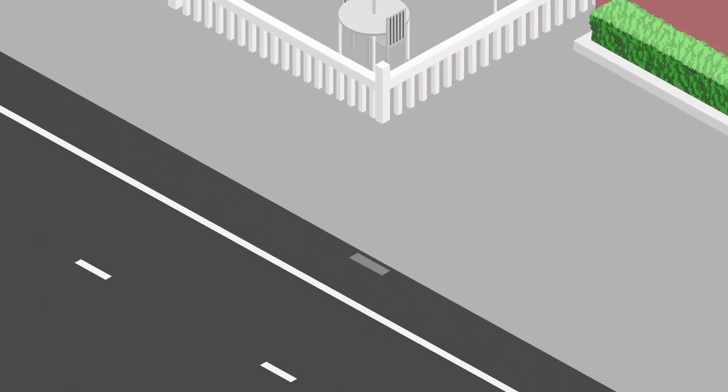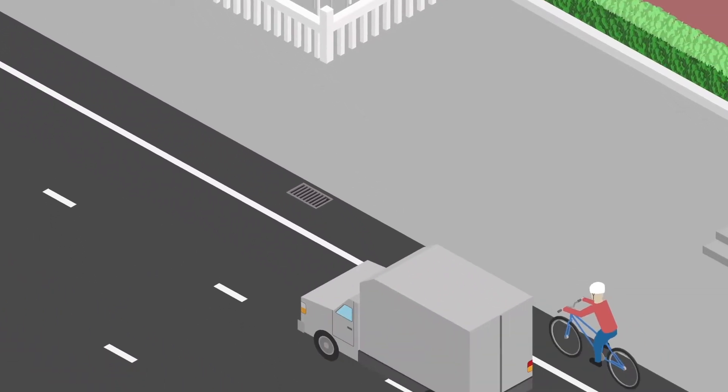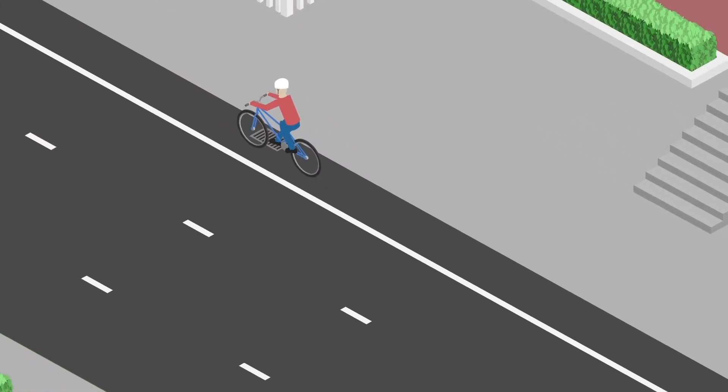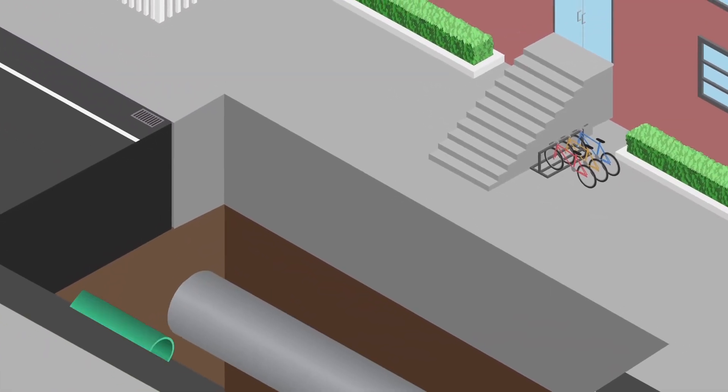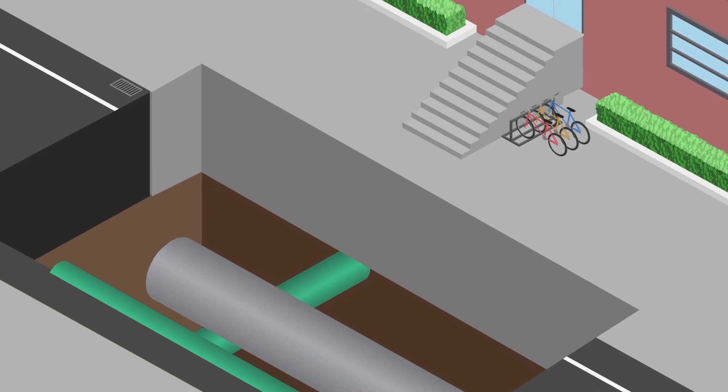Storm and sanitary sewers collect runoff from the street and wastewater from homes and businesses. Since the roadway is being widened, those pipes and manholes need to be relocated and new connections made.